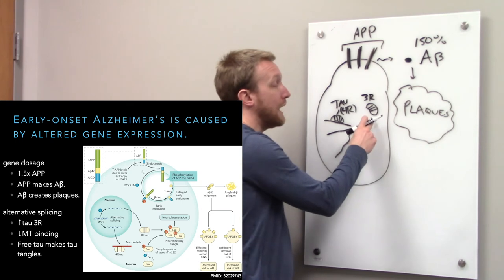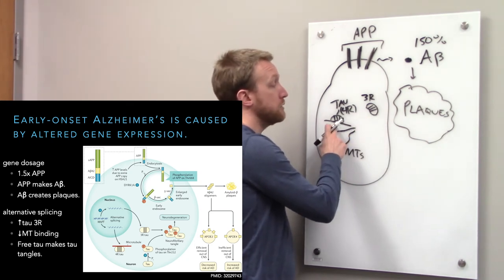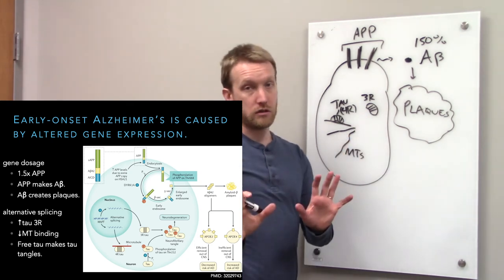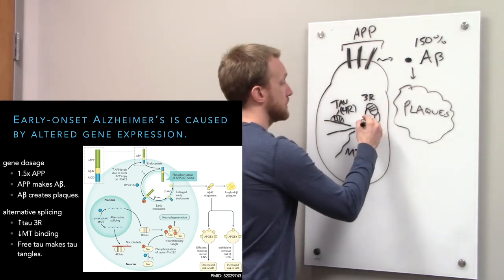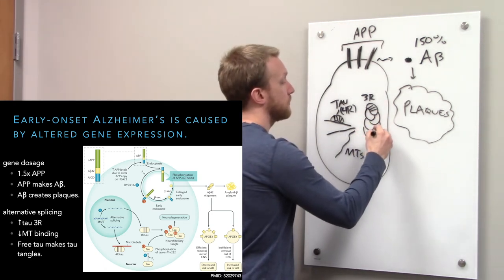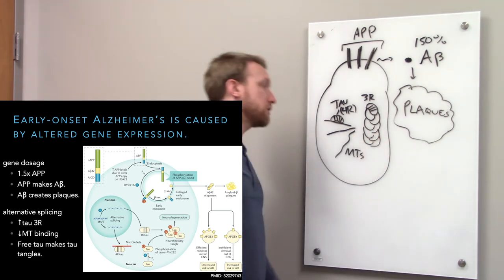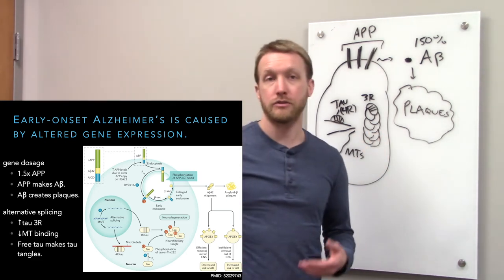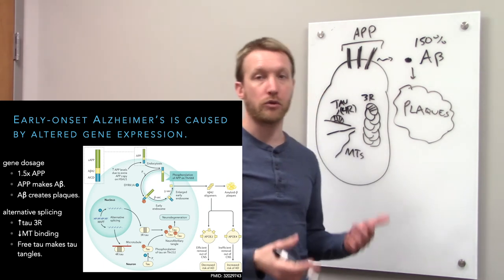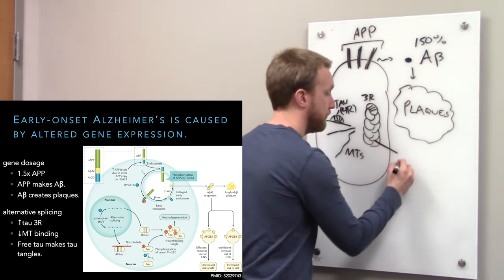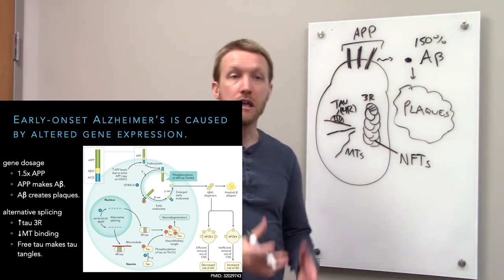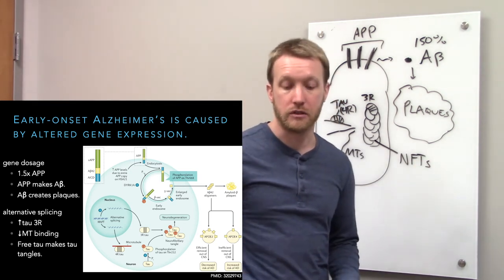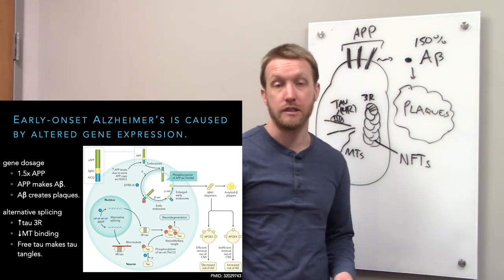This makes it float around rather than stick to microtubules. It's going to start to stick together and form these things called tau tangles or paired helical filaments or neurofibrillary tangles. These are the intracellular globs of junk that we see in Alzheimer's disease.